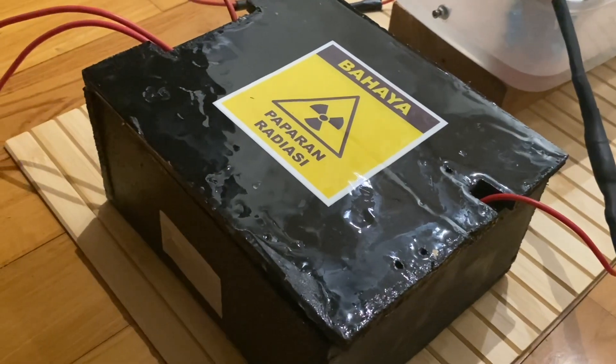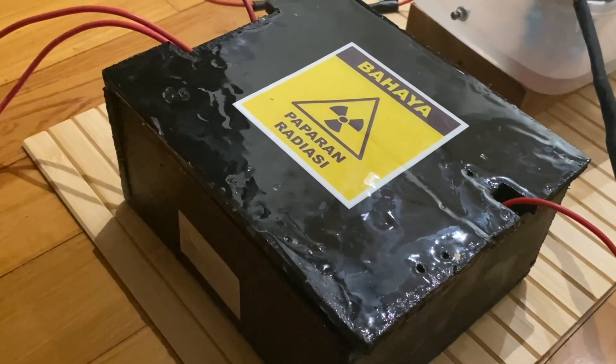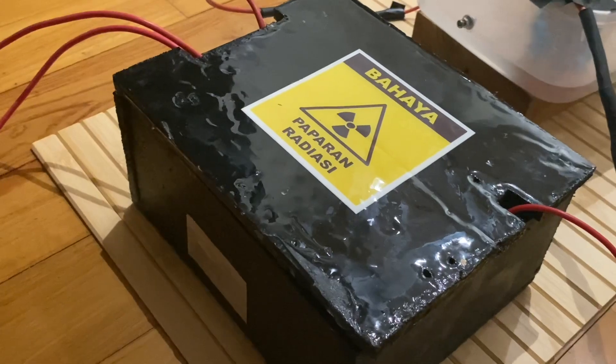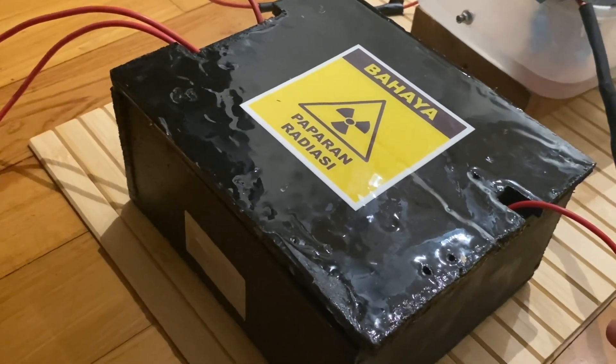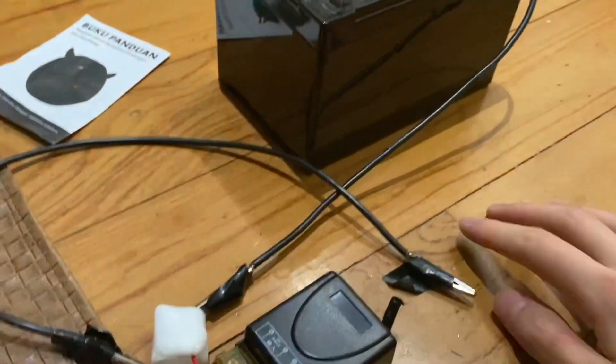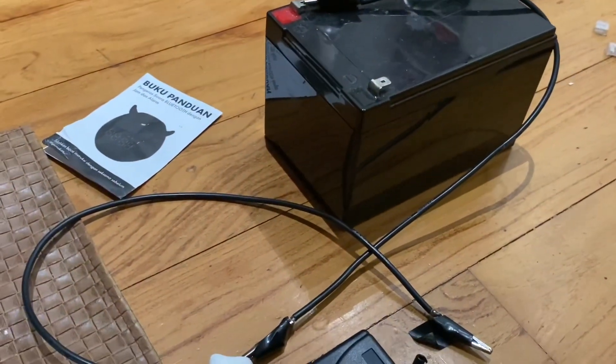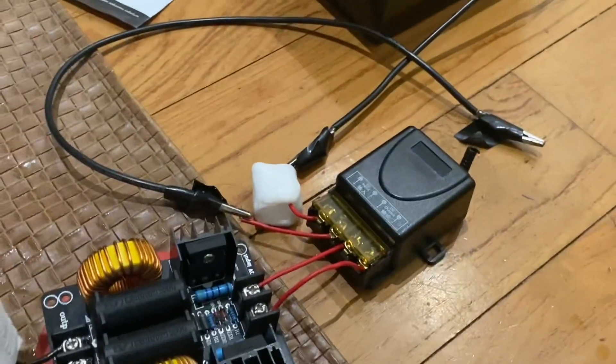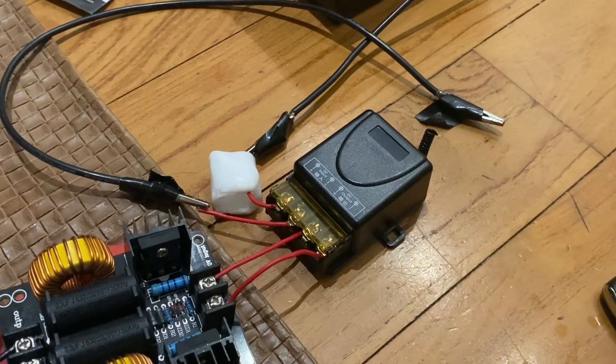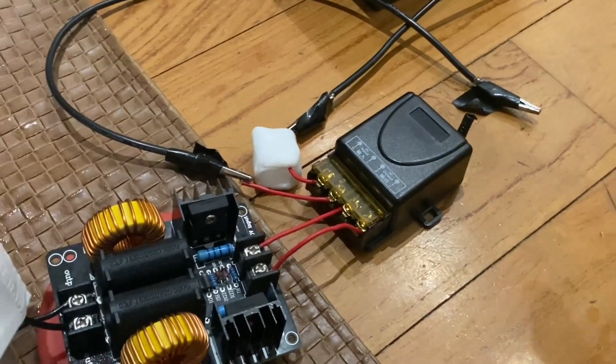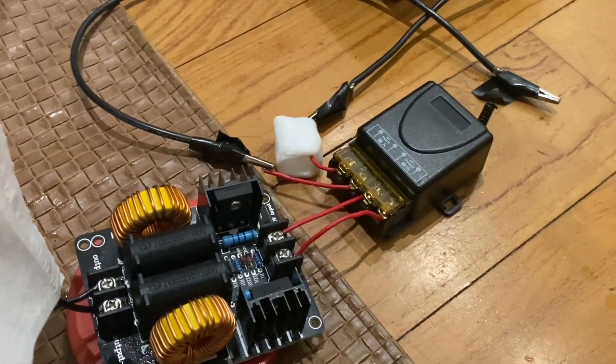An X-ray machine requires three things: an X-ray tube first of all, a high voltage supply, and a lower voltage supply. The high voltage supply in my case starts here with a lead acid battery, this one is 12 volts and 12 amp hours. It goes to a relay which is remote controlled so I can operate the machine at a distance and limit my exposure to the X-ray radiation.